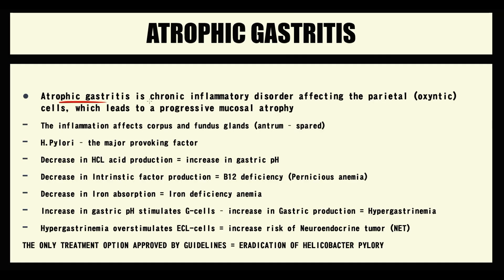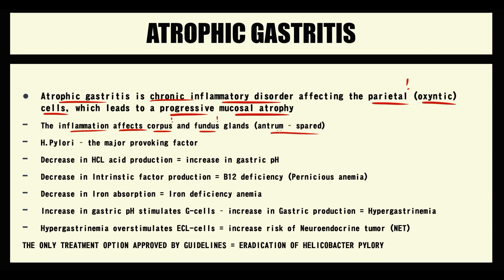Atrophic gastritis is a chronic inflammatory disorder which affects the parietal cells and leads to progressive mucosal atrophy. There are a few crucial features of atrophic gastritis that we have to know. First of all, atrophic gastritis affects the corpus and fundus of the stomach — the antrum is typically not affected.